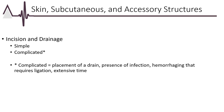The next section is for skin, subcutaneous, and accessory structures. Under the section incision and drainage, most of the codes are separated by the type of I&D being done. They are differentiated by simple and complex procedures. Complex procedures can be identified in the operative note by placement of a drain, presence of infection, hemorrhage requiring ligation, and/or extensive time spent.